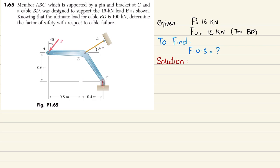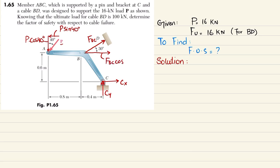First step is to draw the free body diagram and remove the support. There will be a vertical reaction Cy and a horizontal reaction Cx. Due to the cable, we will have a force FBD. The load P is also applied. Splitting this force into rectangular components: one component equals P sine 40 degrees, the other equals P cosine 40 degrees. Similarly, FBC has components: FBC cosine 30 degrees and FBC sine 30 degrees.